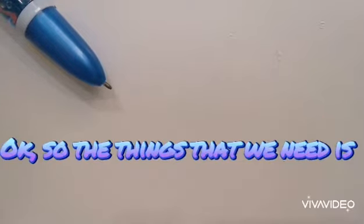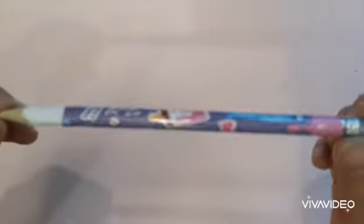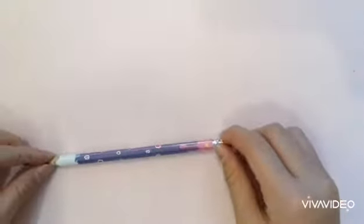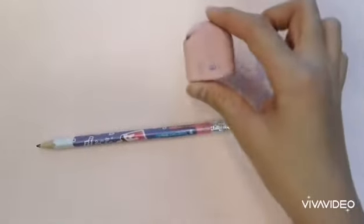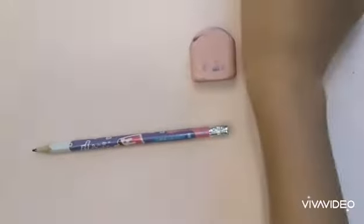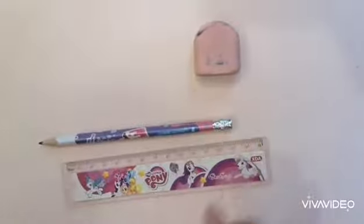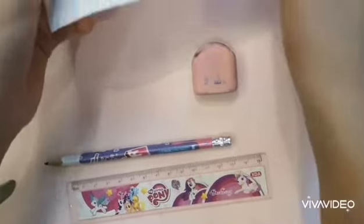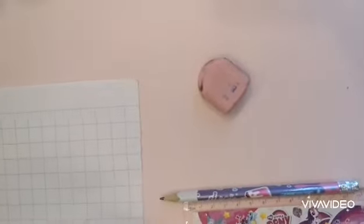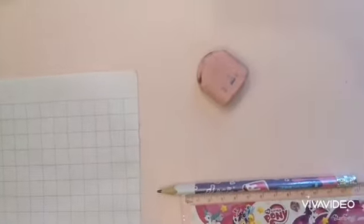The things that we need to do this art: first thing we need is a pencil or original pencil, any pencil is best. Next thing we need is an eraser. The third thing we need is a ruler of any kind, not too long. Next thing we need is a paper. And last but not least, we need some markers.